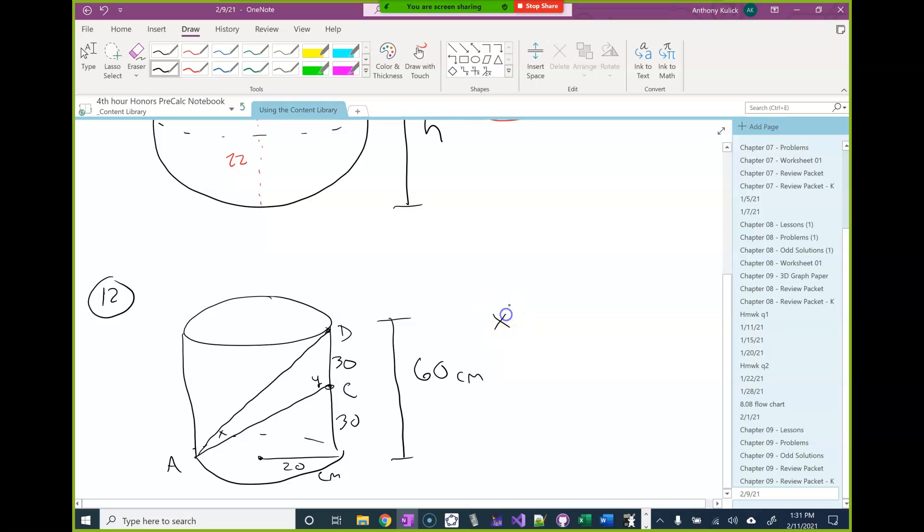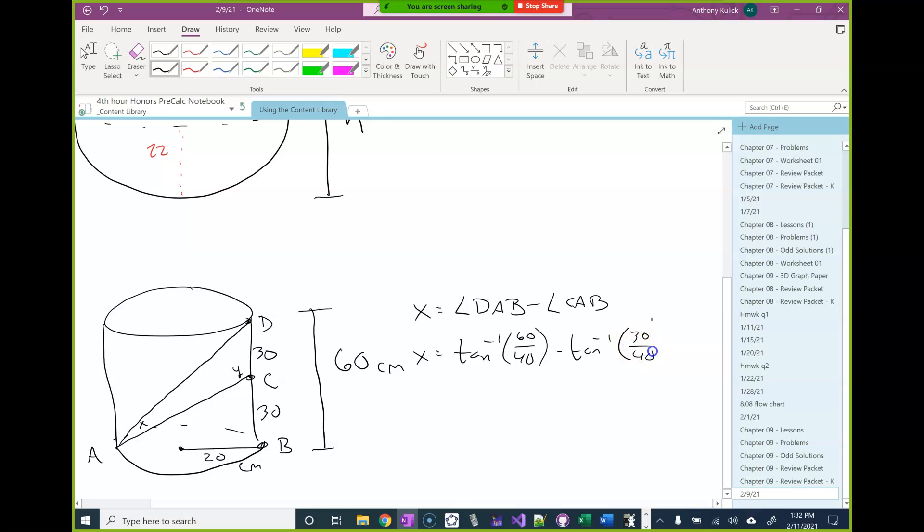Okay. So I'm going to compute x first. So if I think about it, x is going to be the difference in the angle DAB minus angle CAB. Does that make sense to you guys? So DAB contains more than all of x. And CAB is that extra, past x. So I can compute that. DAB is going to be opposite of 60 and adjacent of 40. And CAB is an opposite of 30 and an adjacent of 40.